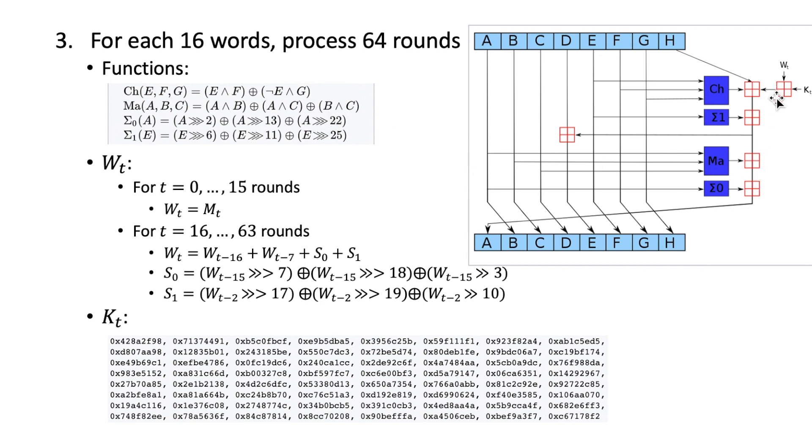Let's see, for this result we also take some inputs from Wt and Kt. Well, for Wt here, for the first 16 rounds, the Wt is actually the original message words, the 16 message words. We put it in Wt for each round.